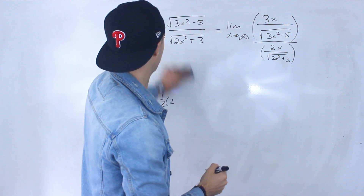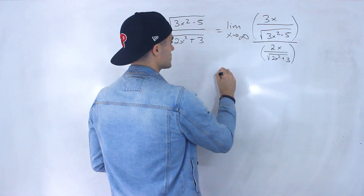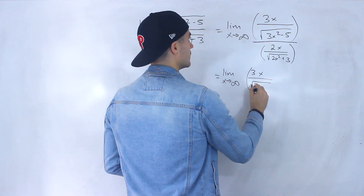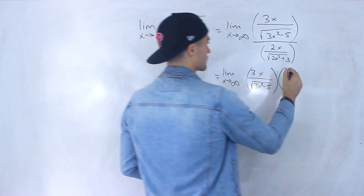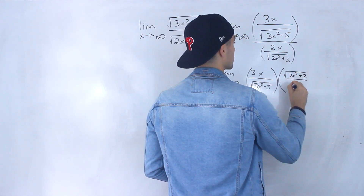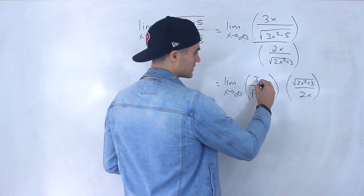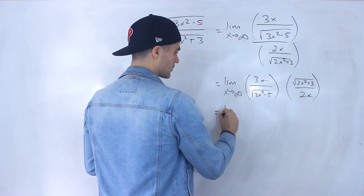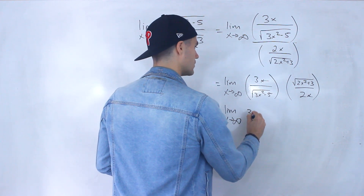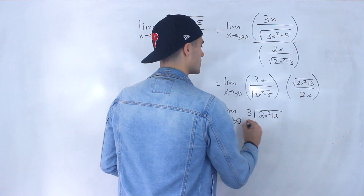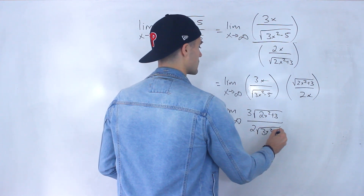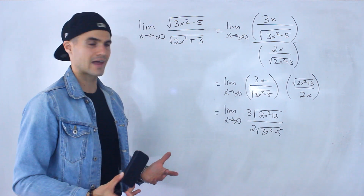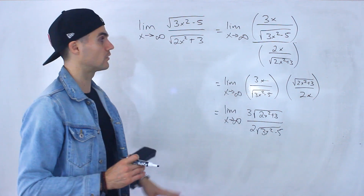Now let's simplify. We have a fraction divided by another fraction, so we rewrite it as the limit as x approaches infinity of 3x over the square root of 3x squared minus 5, times the reciprocal: the square root of 2x squared plus 3 over 2x. The x's cancel out, giving us the limit of 3 times the square root of 2x squared plus 3, over 2 times the square root of 3x squared minus 5. That's what applying L'Hôpital's rule gives us — it's not really making the expression simpler.